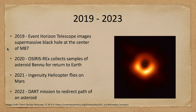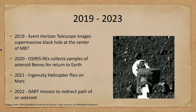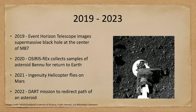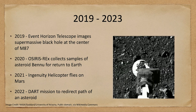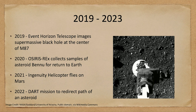In 2019, the Event Horizon Telescope gave us an image of the black hole at the center of a galaxy known as M87, showing the shadow of the event horizon along with material surrounding that black hole. In 2020, OSIRIS-REx collected a sample from the asteroid Bennu — coming down, grabbing material, spraying it up to be captured — and was scheduled to return that sample to Earth in late 2023.